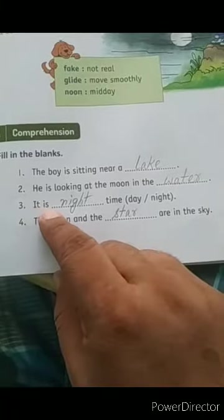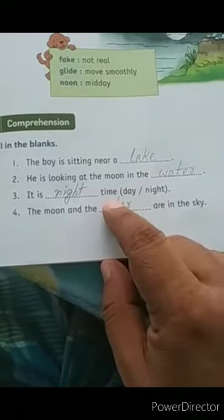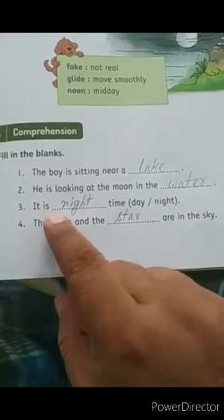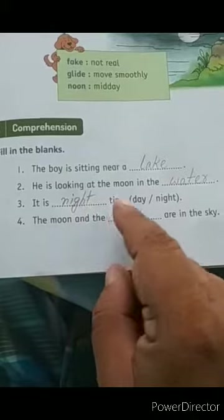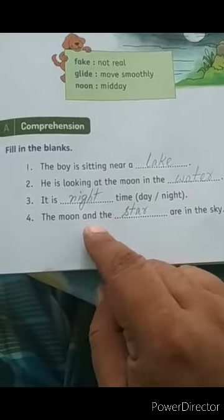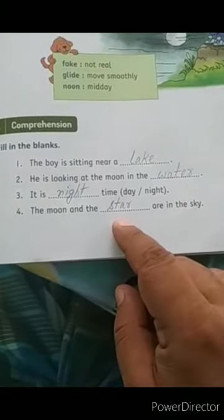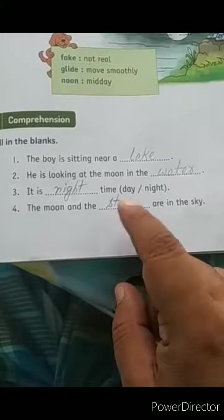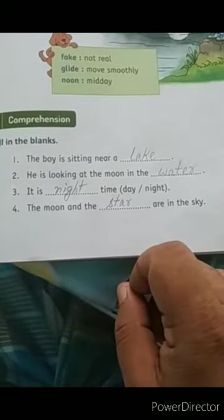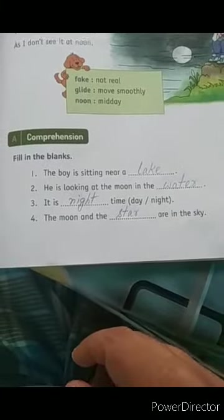Third, it is day or night. When the moon shows up, it is night. It is night time. Fourth, the moon and the dash are in the sky. What happens in the sky? Moon and the stars in the blanks. The stars will fill in blanks.